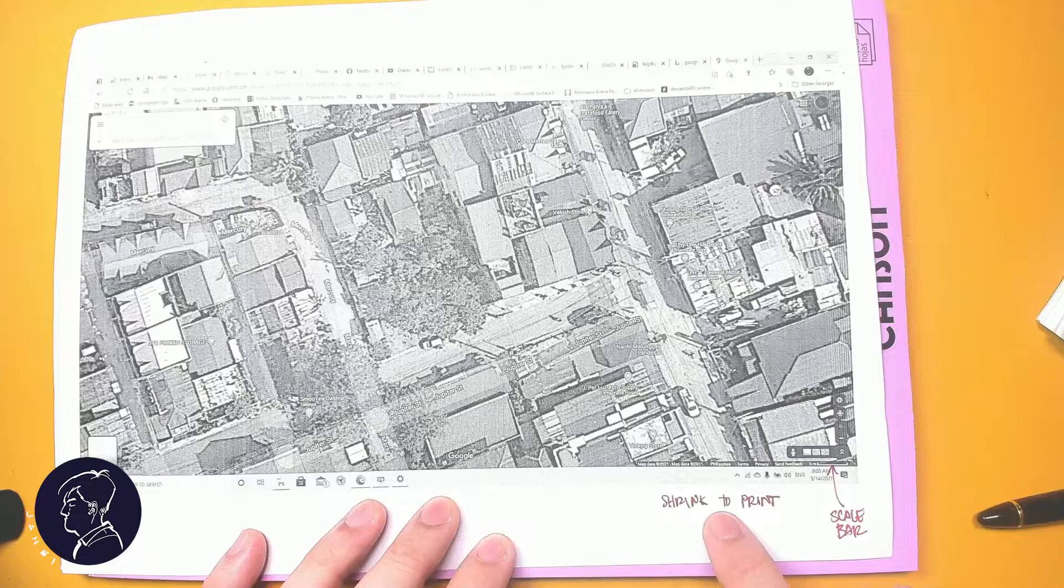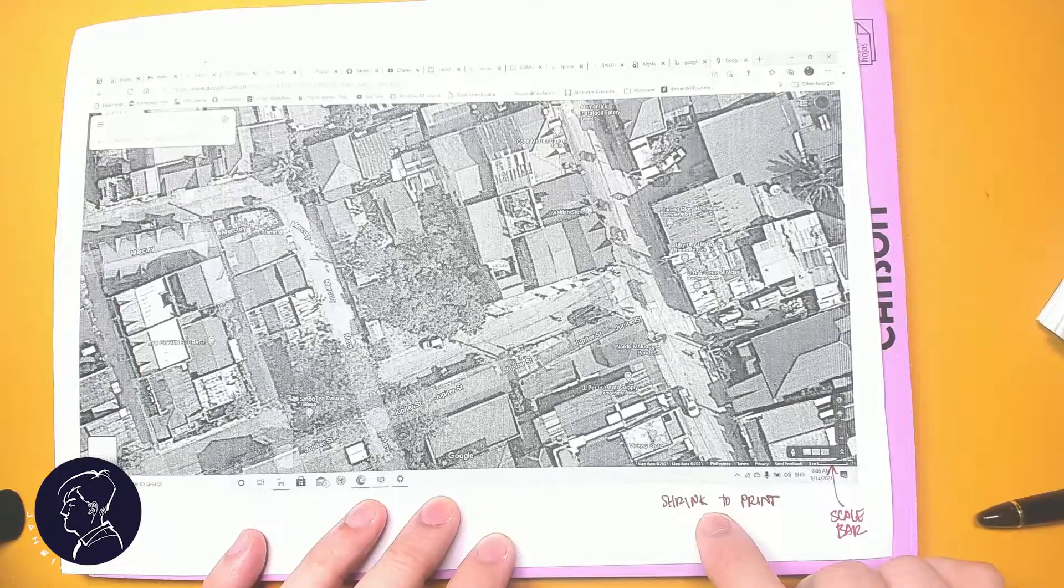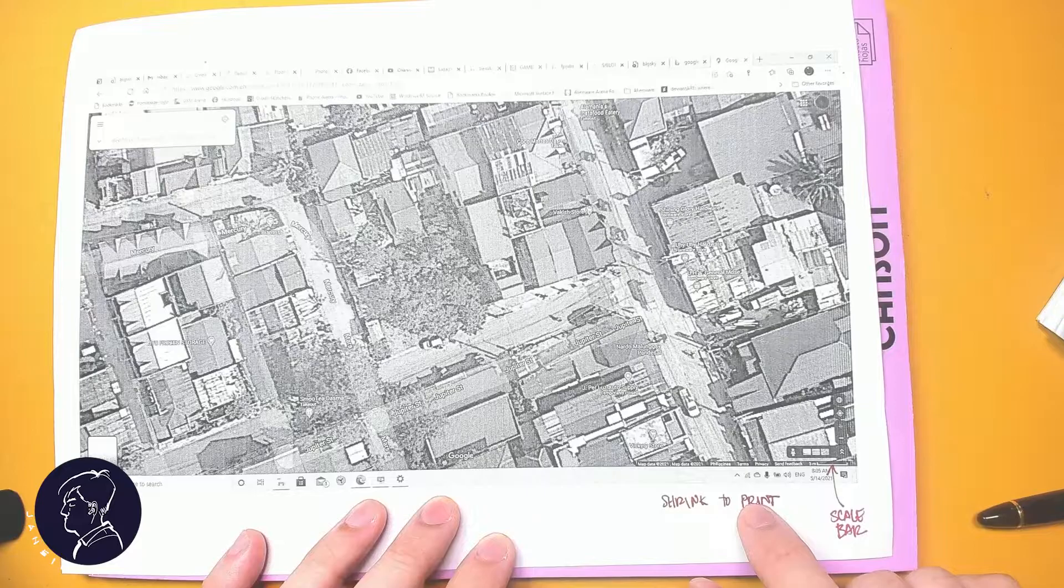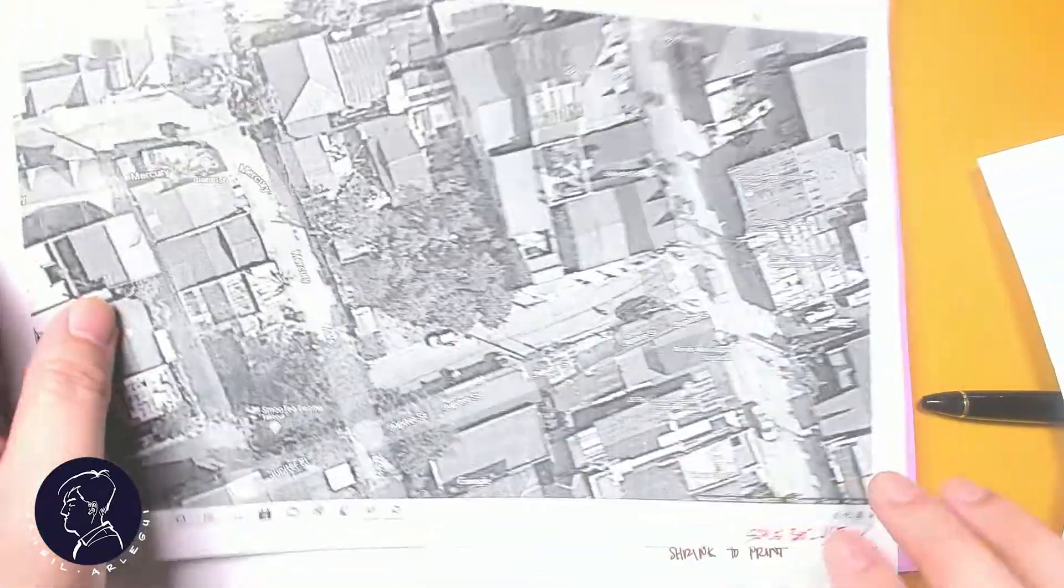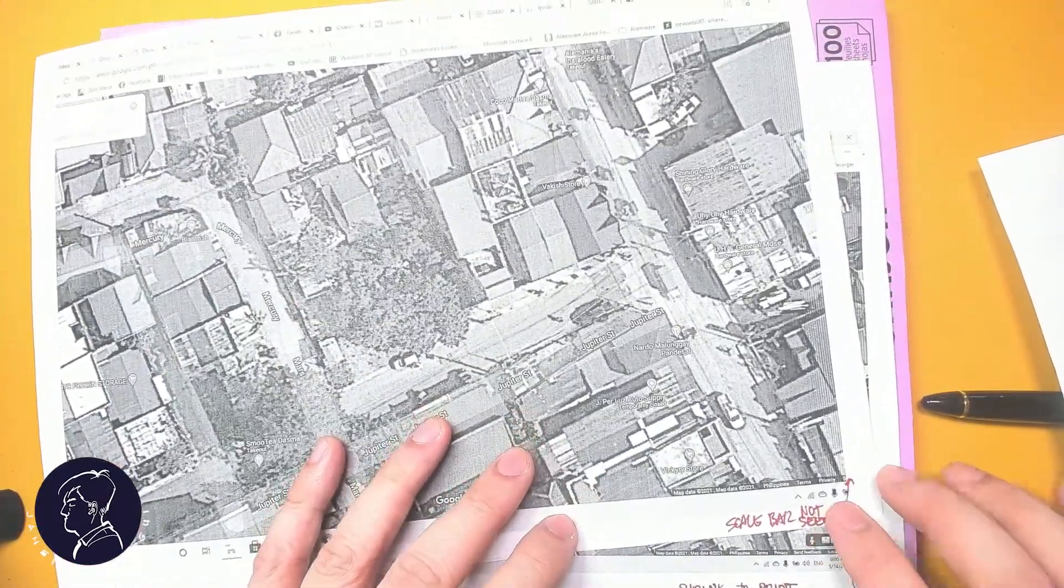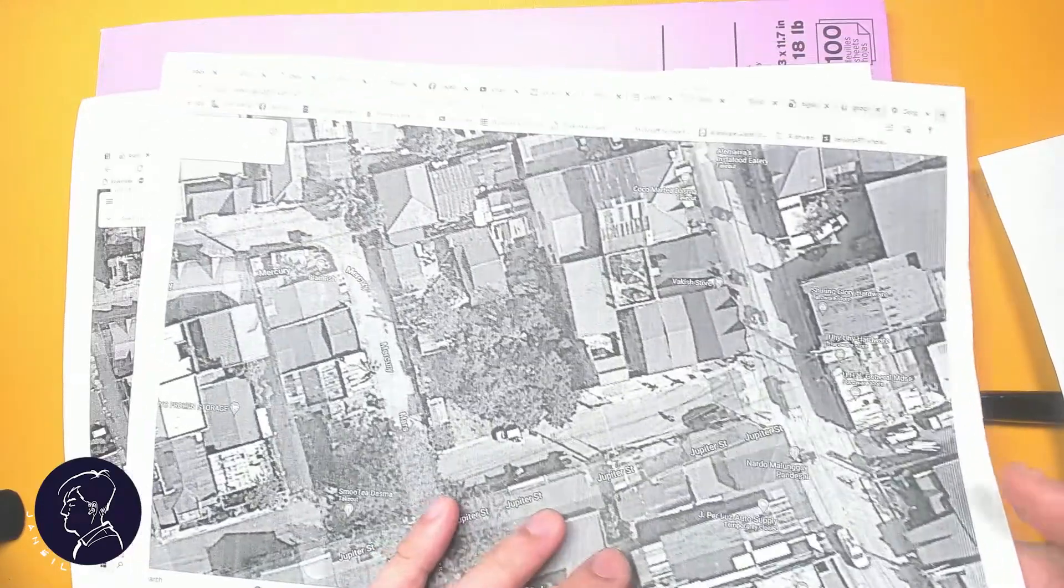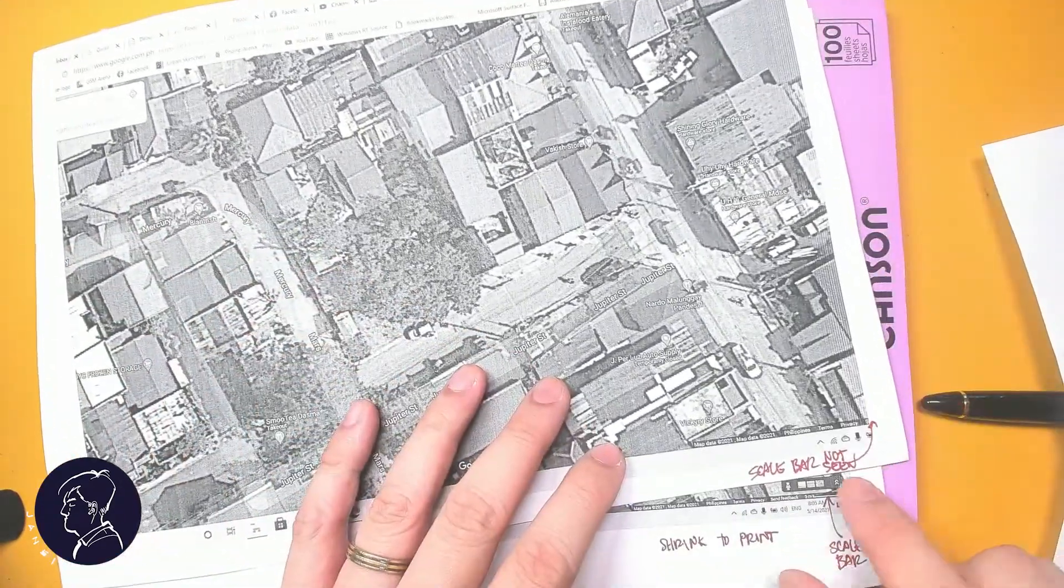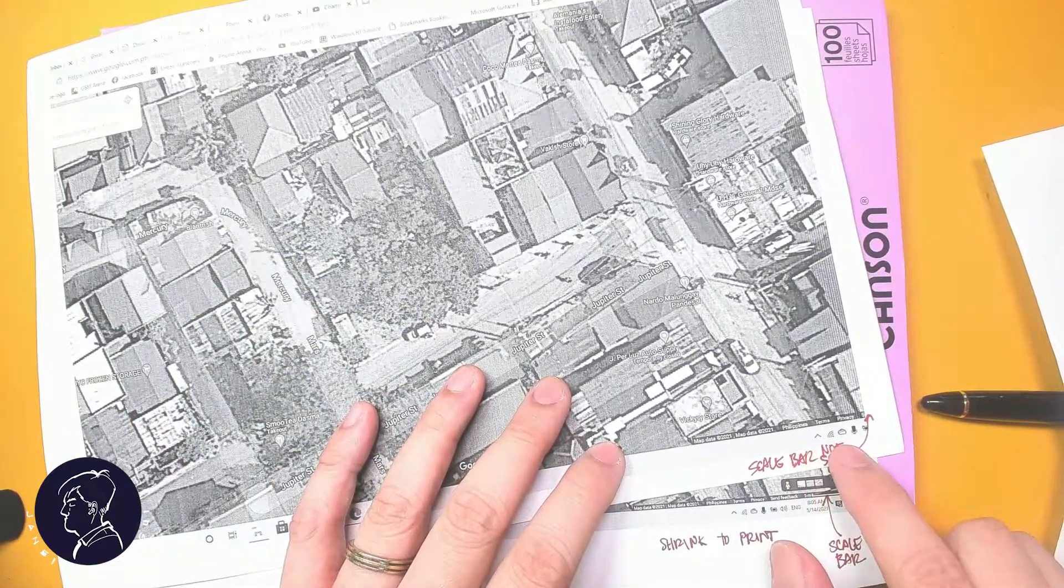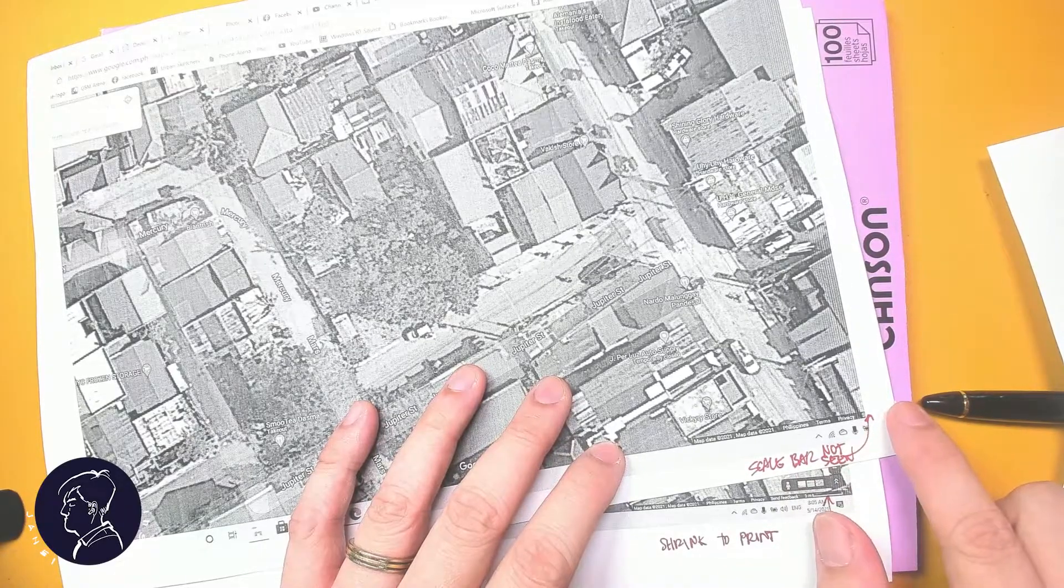Now, one important thing that you need to do is when you're printing this out, is to shrink to print. Because if you don't do that, the scale bar is going to be cut out. This is the first printout I did. I forgot to shrink to print and therefore it's not visible here.